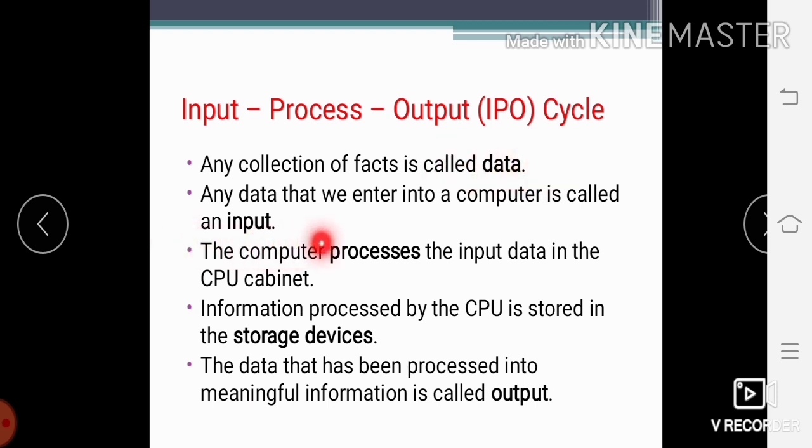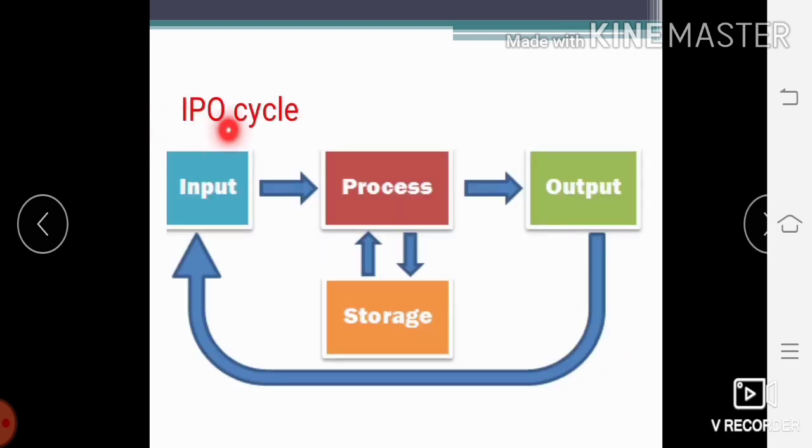Data is converted into the input, then it is processed in the CPU cabinet, it becomes meaningful information, and meaningful information is our output. IPO cycle. This is the diagram of an IPO cycle: Input, Process, Output, Storage.